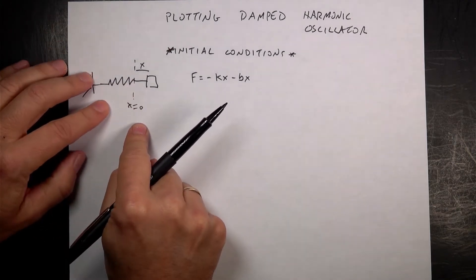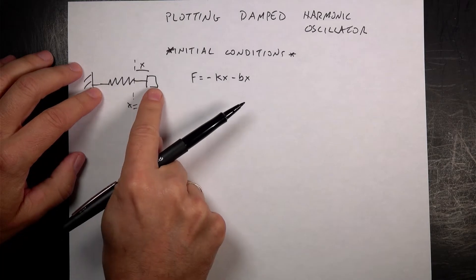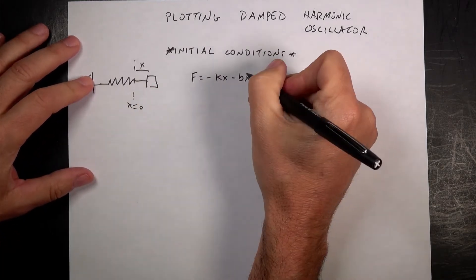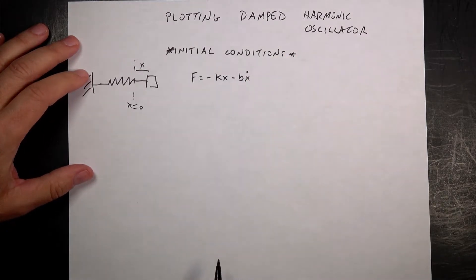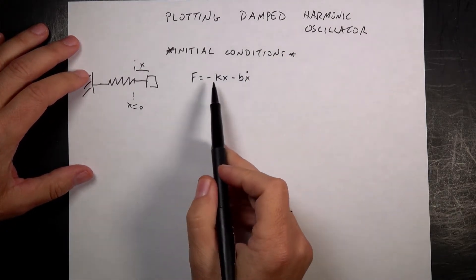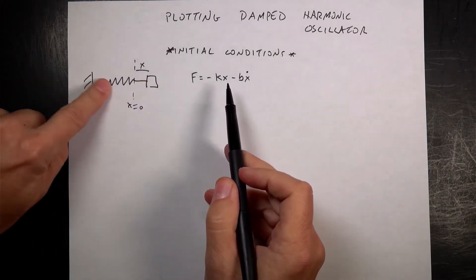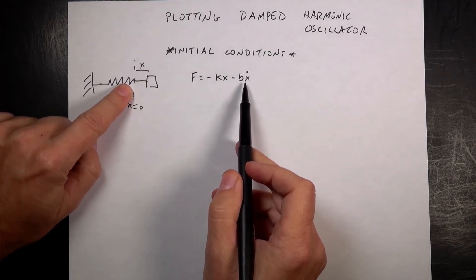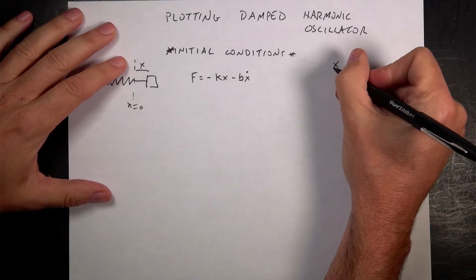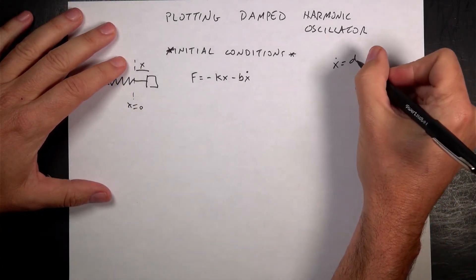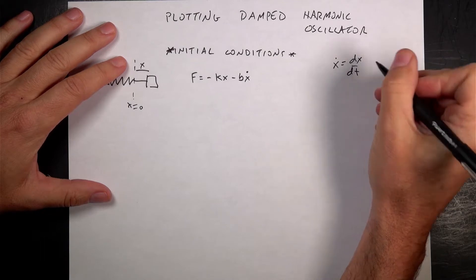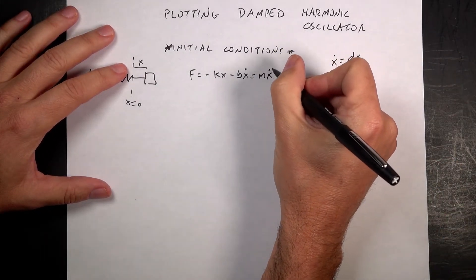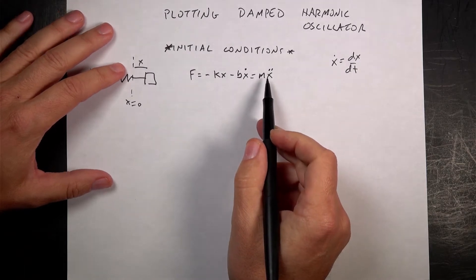So I have a mass connected to a spring with spring constant k, mass m, and there's also a drag force that depends on the velocity — x-dot. The force on it is negative kx, which pulls it back to the center, and then a force in the opposite direction of velocity. x-dot is our notation for dx/dt.